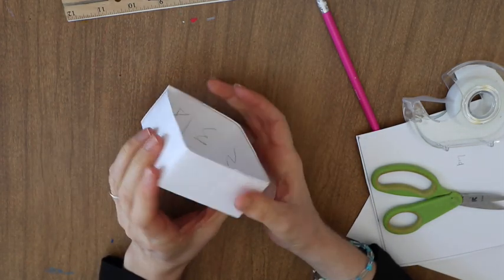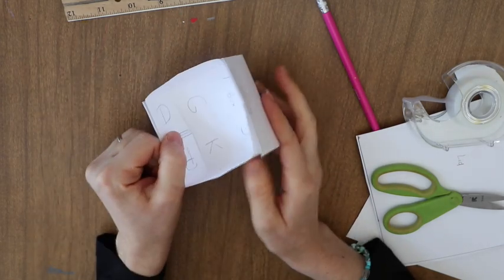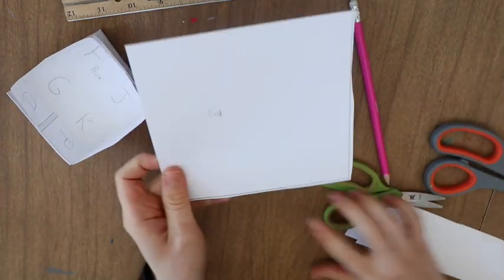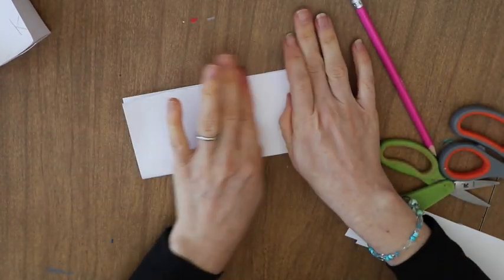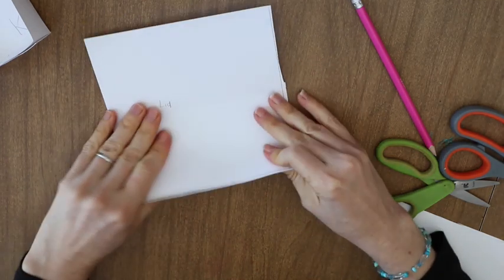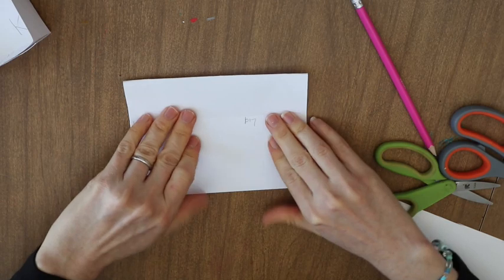You can paint these. I let my children paint them or color them before we put them together. And now we're going to do our lid. We do the lid in the same way. We're going to fold this into 16 equal squares exactly the same way that we did for the box.